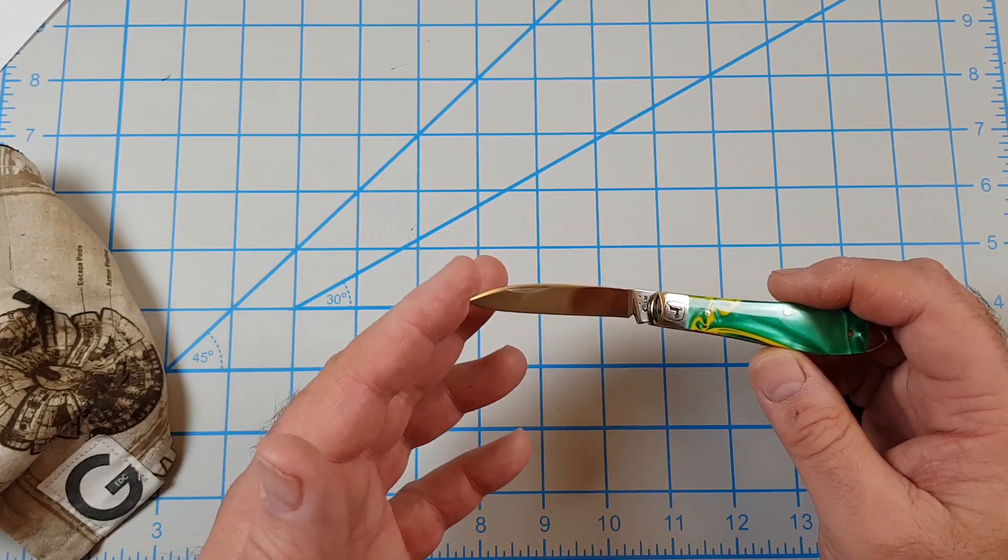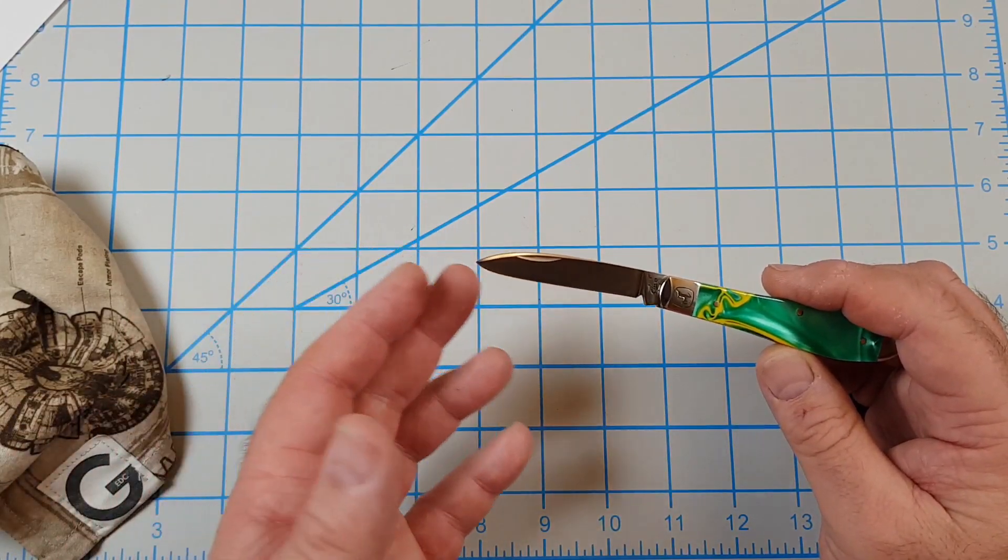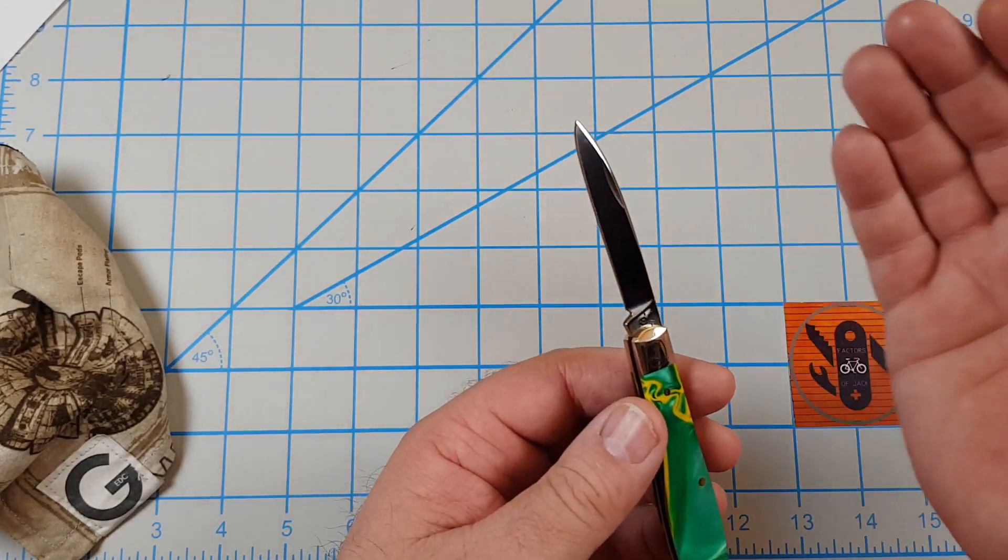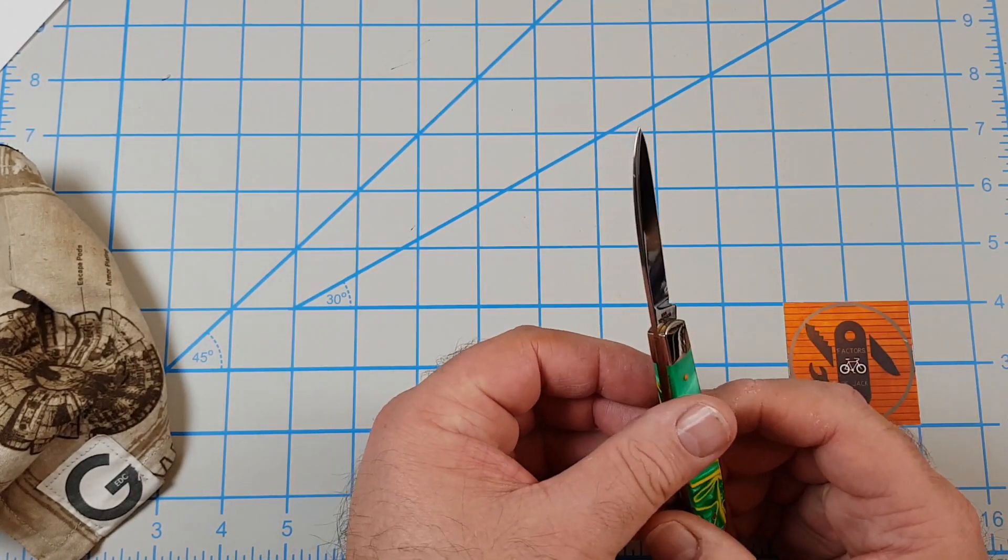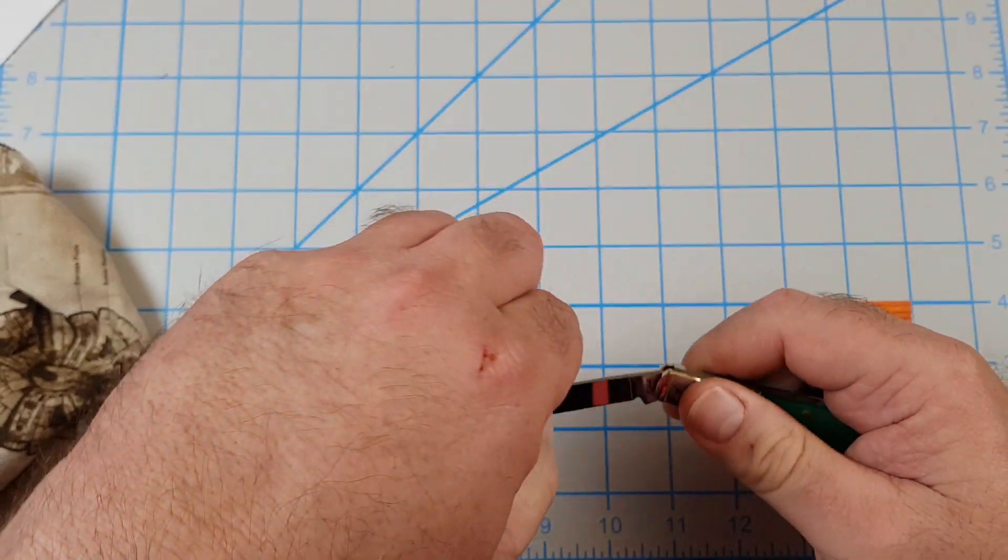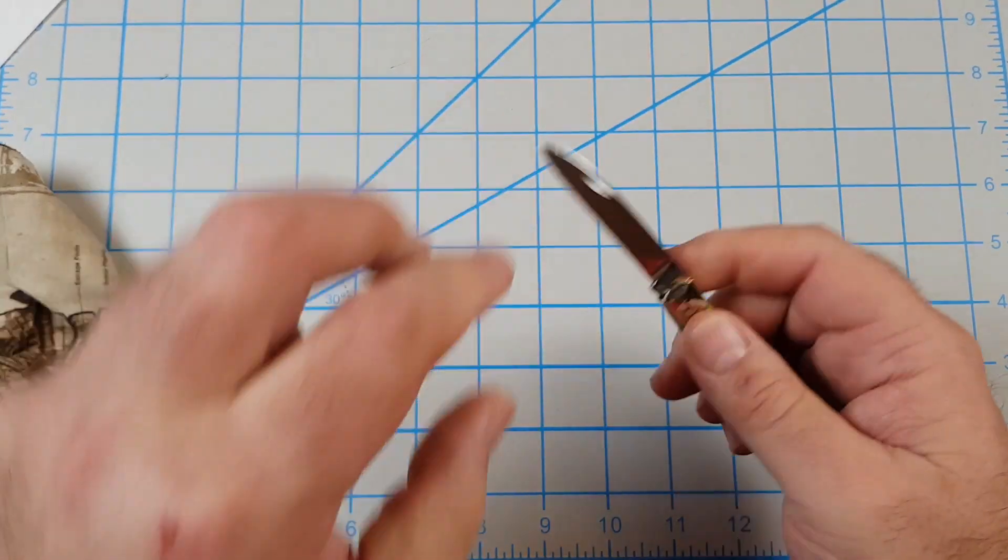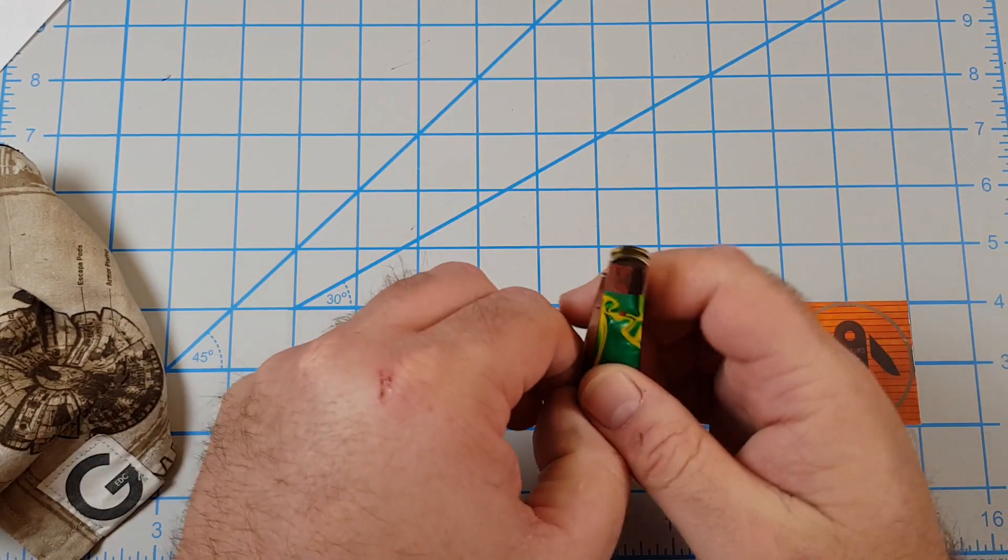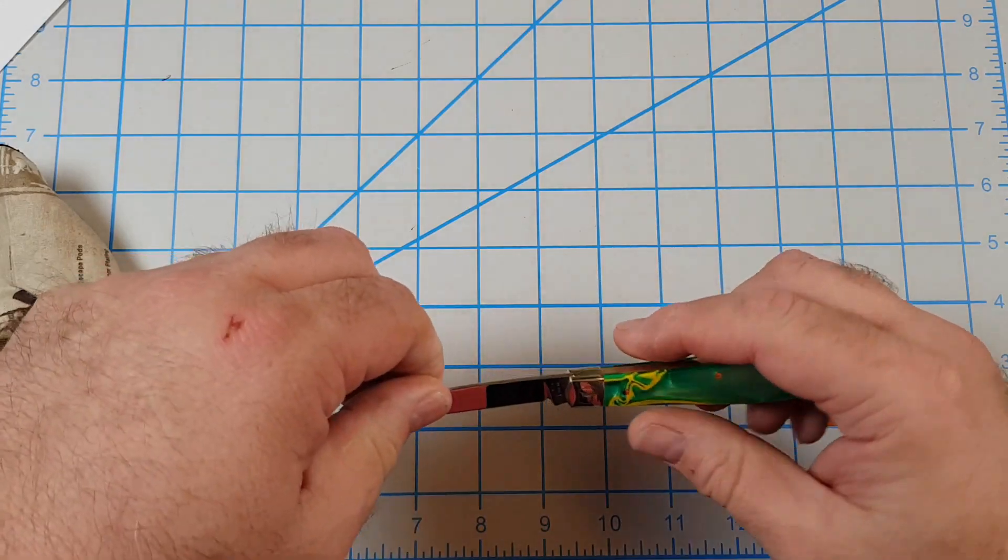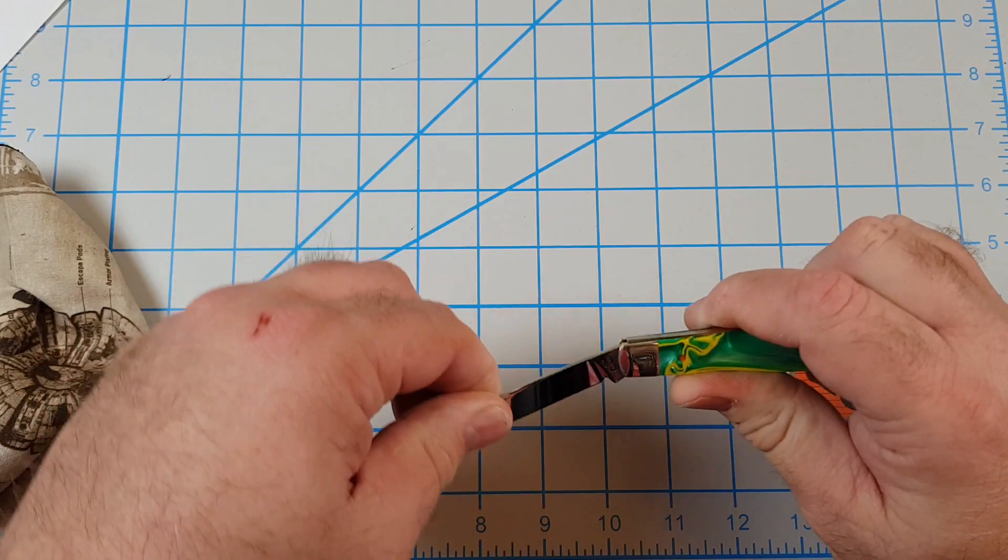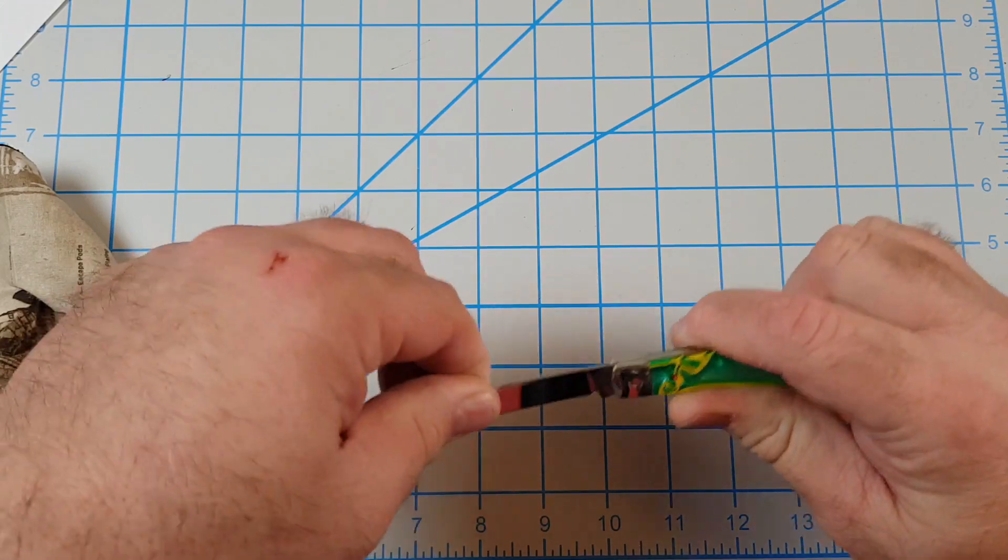The blade is Tru-Sharp surgical steel, two and a half inches long, spear point, flat ground, high polish finish. It's got a half lock, so that's good. It's got pretty strong retention for a slip joint.